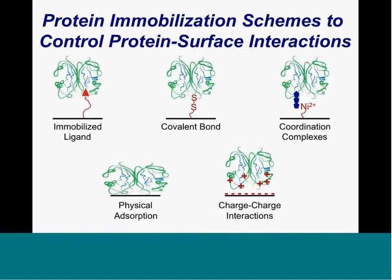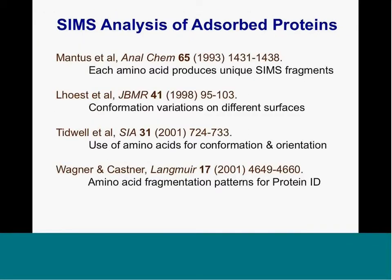I'll spend most of the time talking about protein and peptide immobilization to surfaces to try to control the biological performance of those surfaces. There are many different ways of immobilizing proteins—via ligands, covalent bonds, charge-charge interactions, physical absorption, coordination complexes, etc.—and people are coming up with new schemes every week. If you're really going to confirm that you've attached a protein in a certain conformation and orientation, you've got to have tools that will characterize these proteins and confirm that they're in the orientation you proposed.